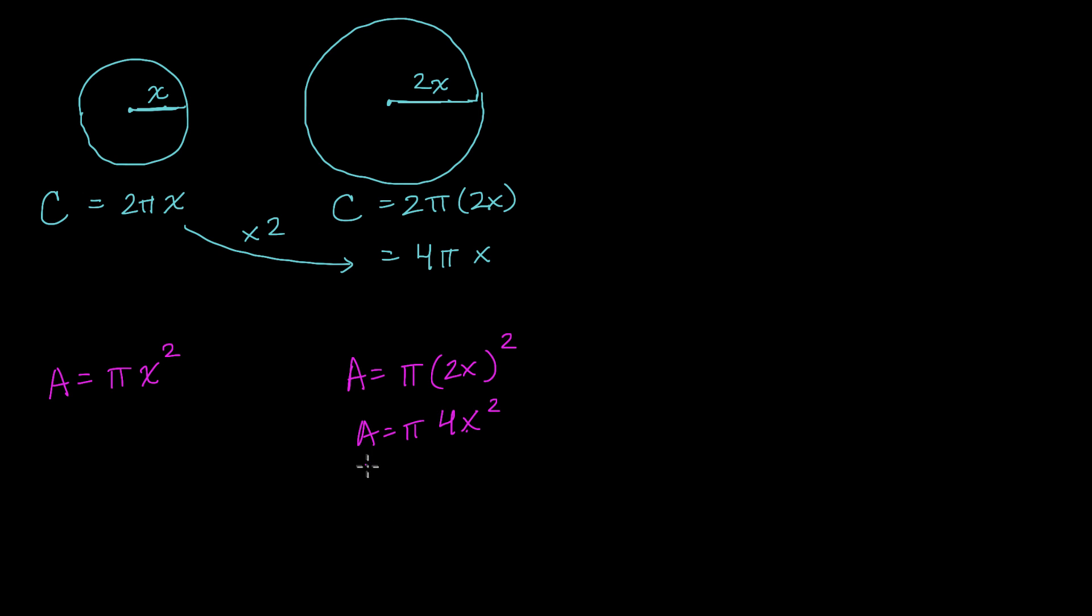Or we could rewrite this as area is equal to 4πx². Notice, now the area has increased not by a factor of 2, the area has increased by a factor of 4 when we doubled the radius. Now why did this happen? I encourage you to pause the video and think about it.